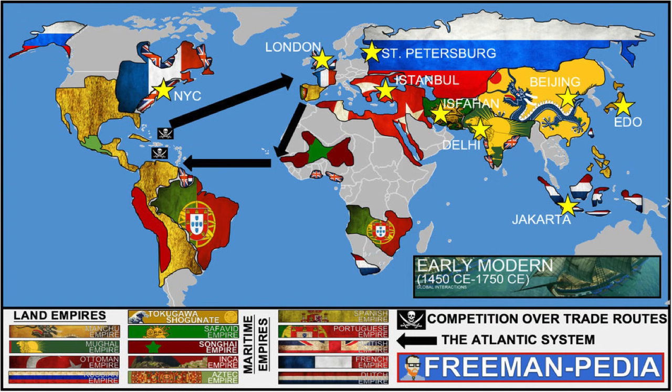If you look at the map here, you can see all of the major land and maritime empires throughout the world at this point in time. You've got your Mughal Empire, your Tokugawa Shogunate, Russia, Britain, France - everybody that was a major key player during this time period is on this map. It shows how powerful the Europeans were, how powerful the gunpowder empires were, and also how isolated China and Japan made themselves.